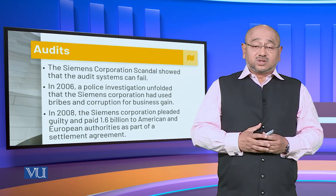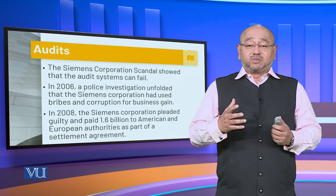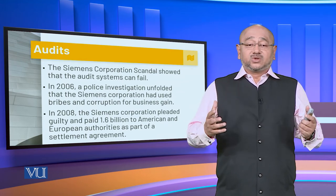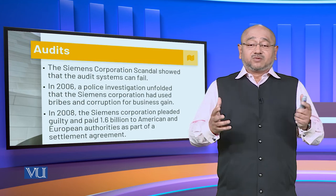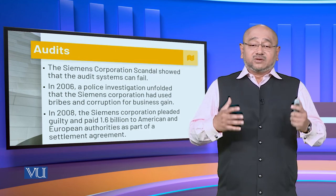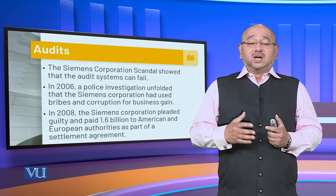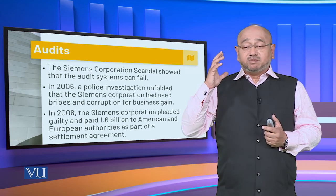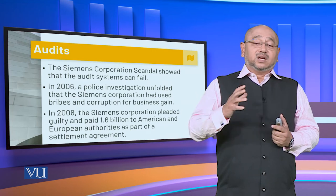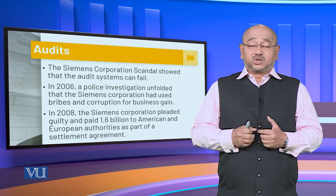In 2006, a police investigation revealed that Siemens Corporation had used bribes and corruption for business gain. As a result, in 2008, Siemens paid 1.6 billion dollars to American and European authorities as part of a settlement.